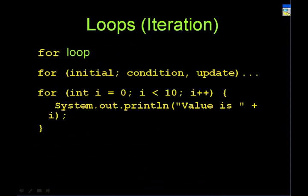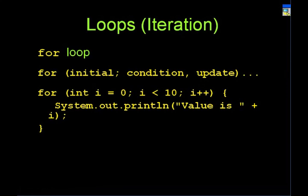For loops combine the initialization, the condition, and the incrementing phase all in one line. Here you create 'int i = 0', check 'i < 10', and increment 'i++'. You go into the for loop, execute the initialization once and only once at the start, then check if the condition is true, execute this code, and then increment the value — the increment happens after the code runs. Then you check the condition again, increment again, eventually stopping when i reaches 10.